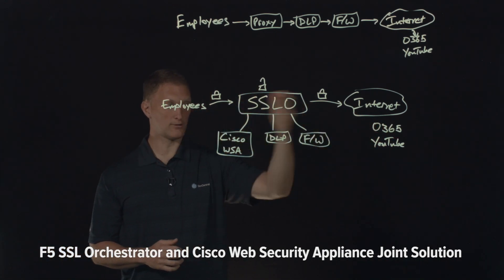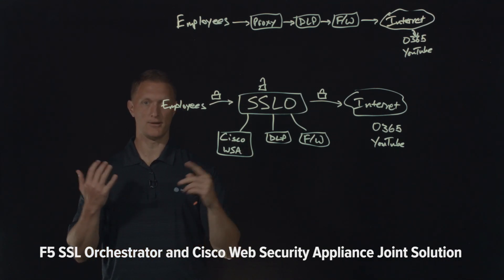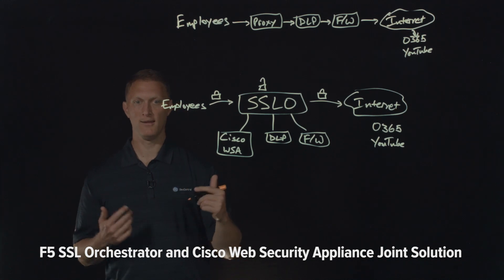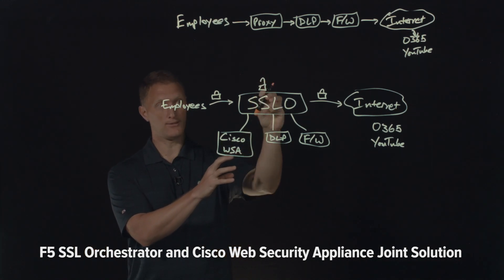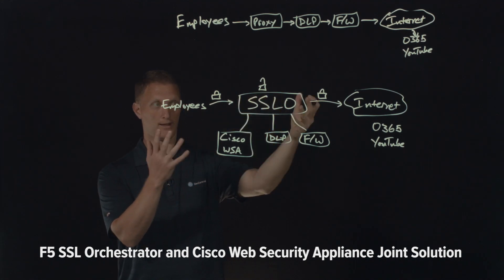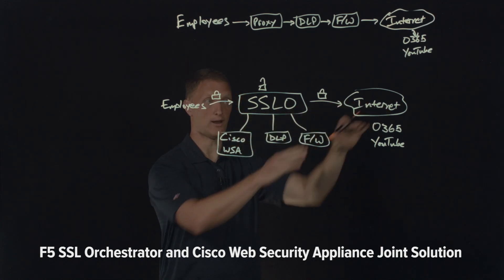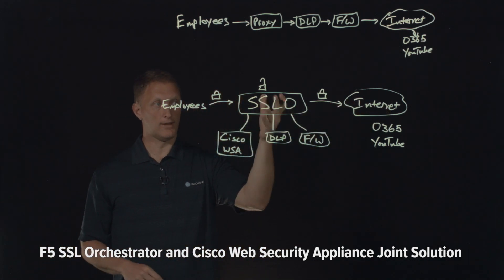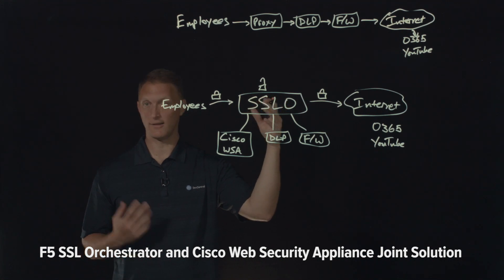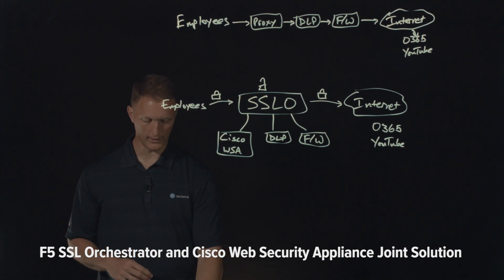For example, if one of the websites is protected by a healthcare HIPAA regulation, or maybe there's a government or bank law that says you can't inspect that specific traffic, the SSL Orchestrator will know that based on its classification and the policies you set up, and will let that traffic through without passing it to any of the security devices. The SSL Orchestrator can also be set up as a Layer 2 device — like a bump in the wire — or as a Layer 3 routed device.